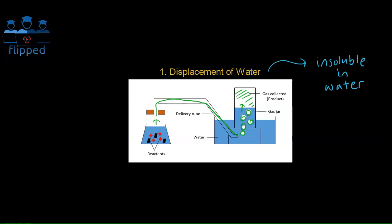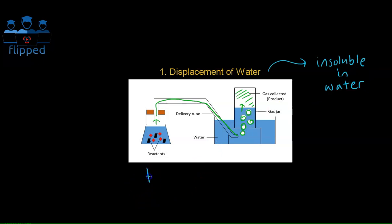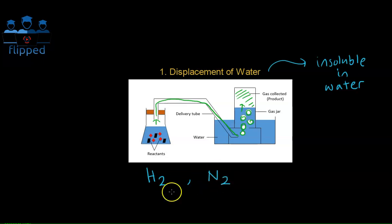So what are some of the gases that exhibit this property? We have hydrogen, which is H2, and we also have nitrogen, which is N2. These are two examples of gases that can be collected using the displacement of water method.